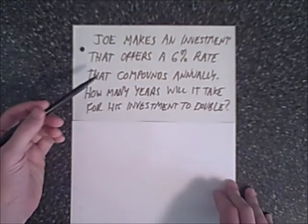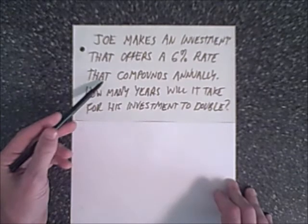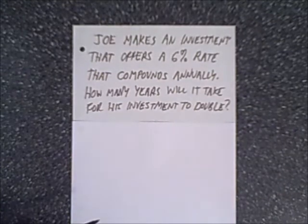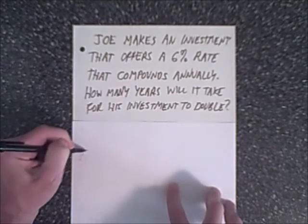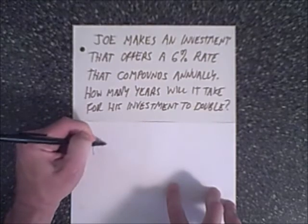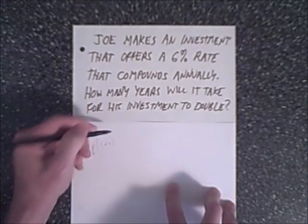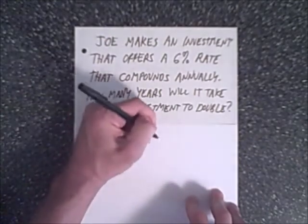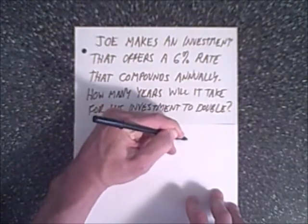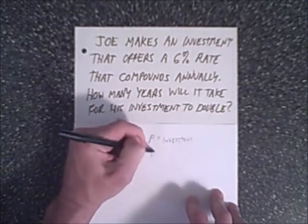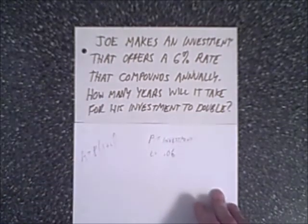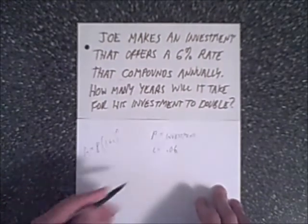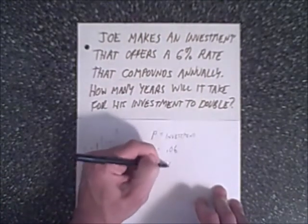In this example, we have a compounding interest question. Joe makes an investment that offers a 6% rate that compounds annually. How many years will it take for his investment to double? Remember the formulas. This is compounding interest. So you have your amount is going to equal your principal times the interest rate, which is one plus that's the amount that's accumulating, to the number of years. Let's take a look. Joe makes an investment. So we're going to call the investment P. It offers 6% interest rate, so I is going to equal .06. And it compounds annually. How many years will it take for his investment to double? So the amount is going to be 2P.